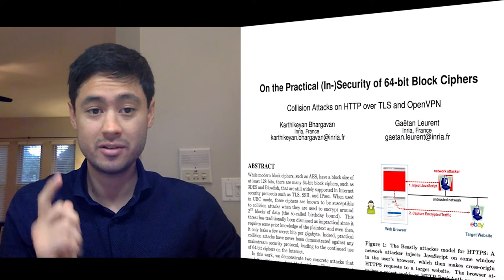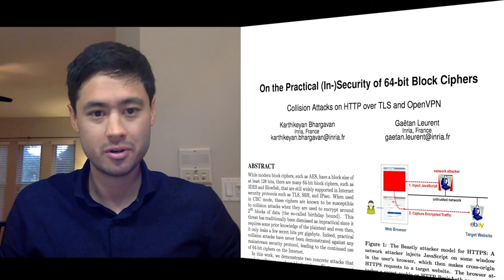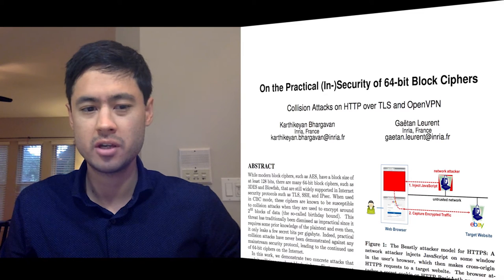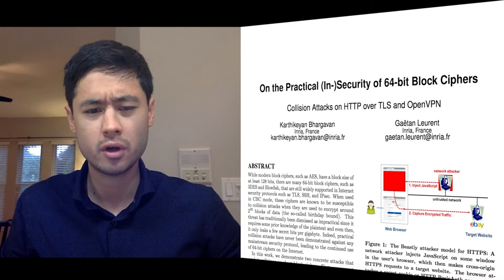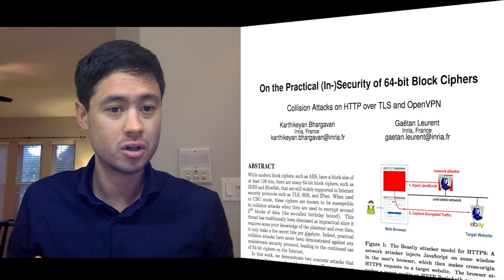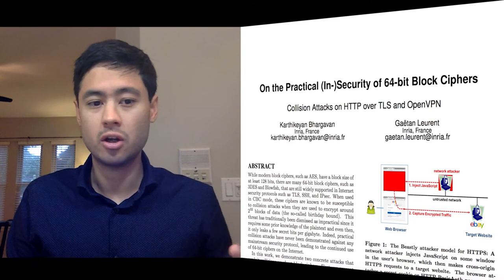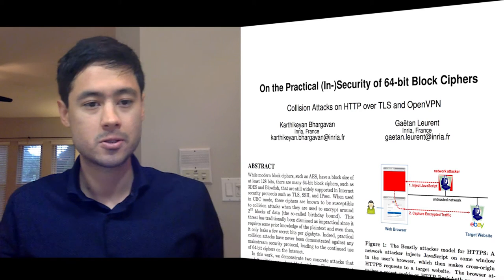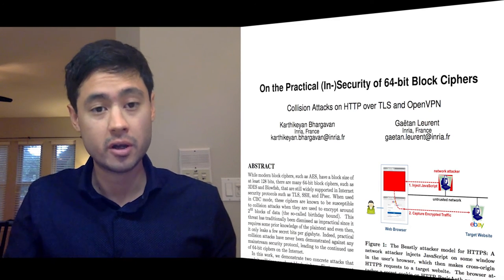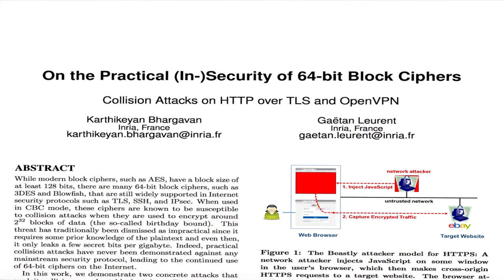Hey, hi! I'm David Wong and this is a TLDR of this paper on the practical insecurity of 64-bit block ciphers. It was released August 24th of 2016 by two guys from the INRIA — the French people who find a lot of TLS attacks like Freak, Logjam, Drown, etc. So this is an interesting paper, another one of these attacks on TLS, and mostly this video is a short video to explain the most important points of the paper.